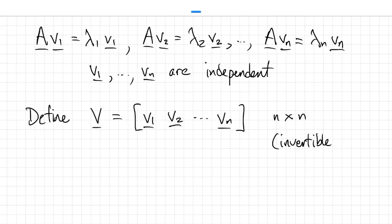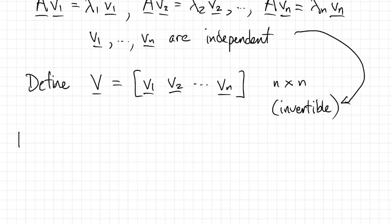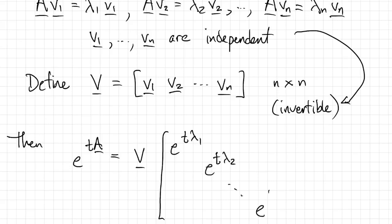That follows from the fact that the columns are independent. Then we have a formula for the matrix exponential e to the tA. It's the matrix V times a diagonal matrix with exponentials of the eigenvalues on the diagonal times V inverse.